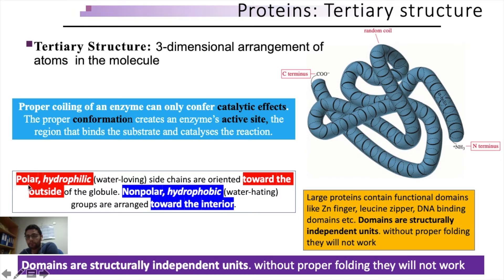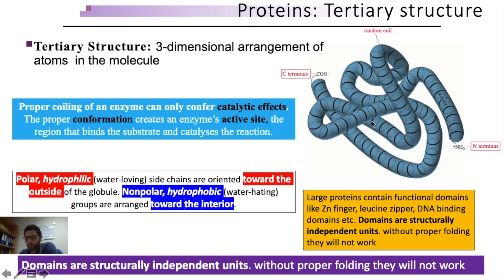Various amino acid groups — polar and non-polar — arrange themselves according to their environment. Polar and hydrophilic amino acids arrange themselves on the surface of the protein, whereas hydrophobic or non-polar amino acids occupy the inner core of the protein. We will discuss these shortly.